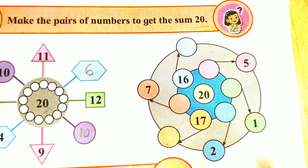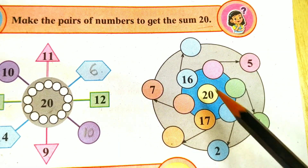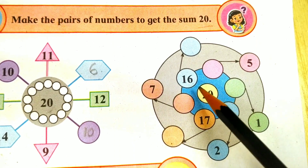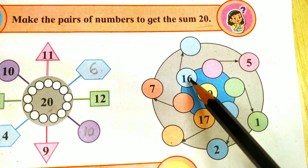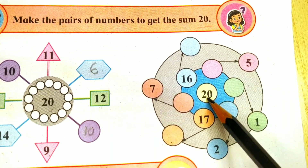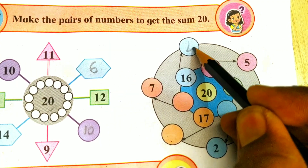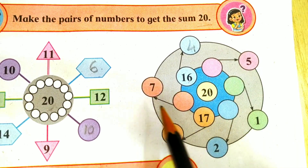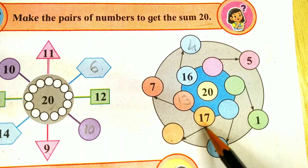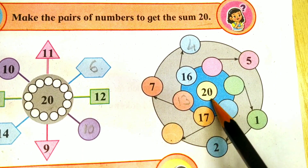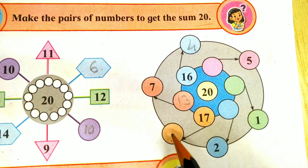Now we will see another example. Here we have to find the pair of the given number so that their sum will be 20. What do we have to add to 16 so that the sum will be 20? Yes, the number is 3.